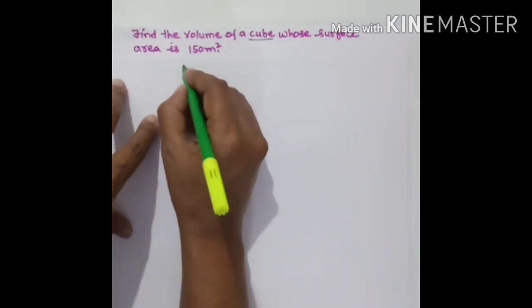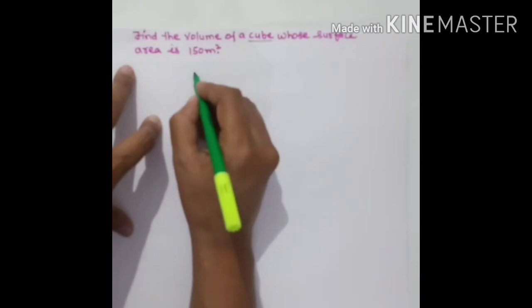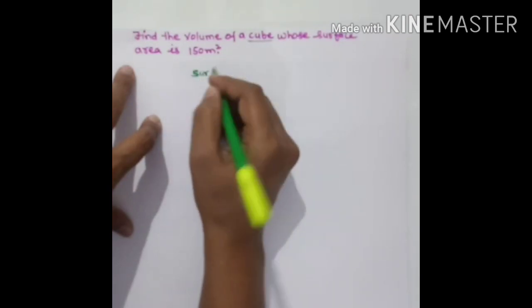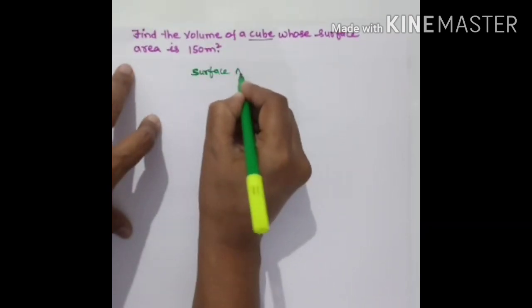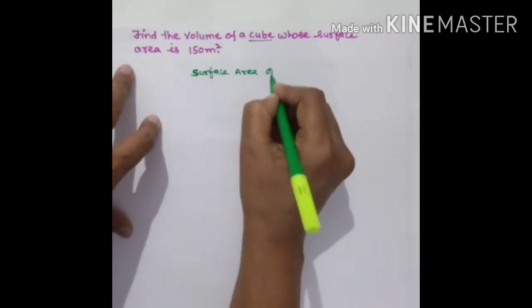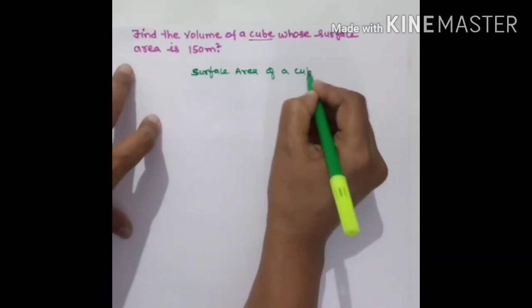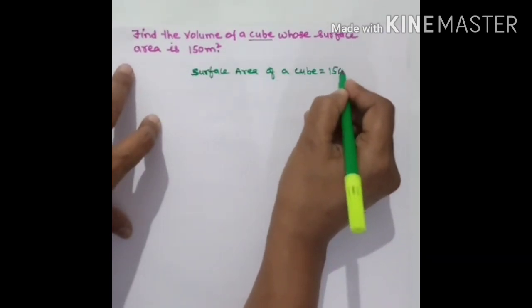First, what is given? Surface area is given. Surface area of the cube is 150 meter square.